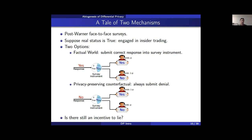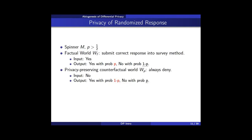In the privacy-preserving counterfactual world where the respondent inputs no, the output is yes with probability 1 minus P and no with probability P. The question is: now that we have this machine between the respondent and the interviewer, is there still an incentive to lie?